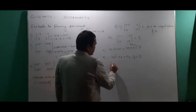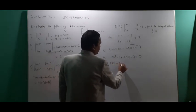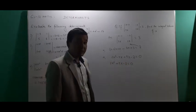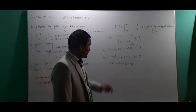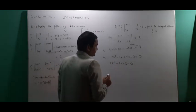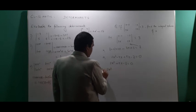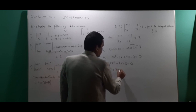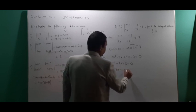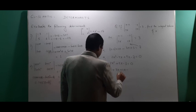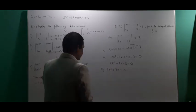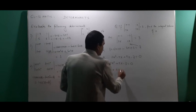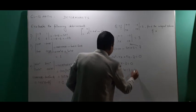Now we'll factorize by the middle term splitting method. We have 2x squared plus 5x minus 3 equals 0. This can be split as 2x squared plus 6x minus 1x minus 3 equals 0.